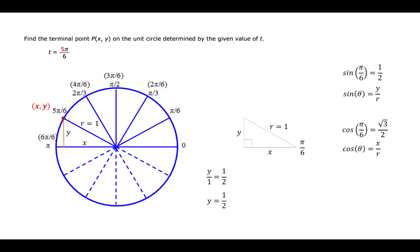Now, using the cosine relationships, we have x over 1 equal to the square root of 3 over 2, which gives us x equal to the square root of 3 over 2.